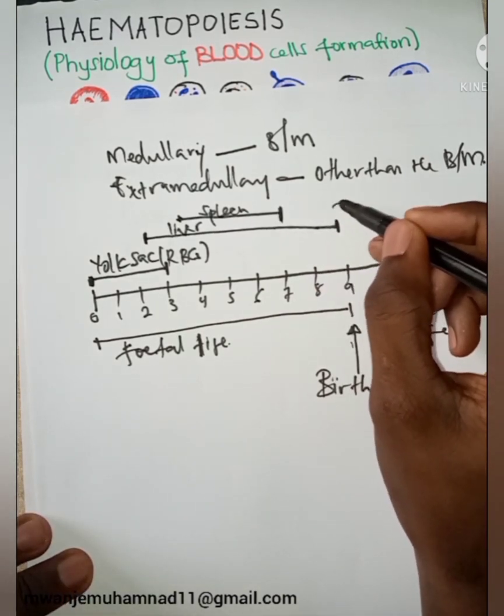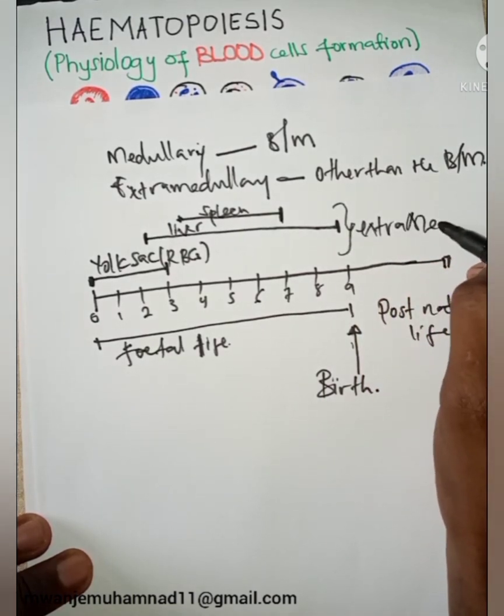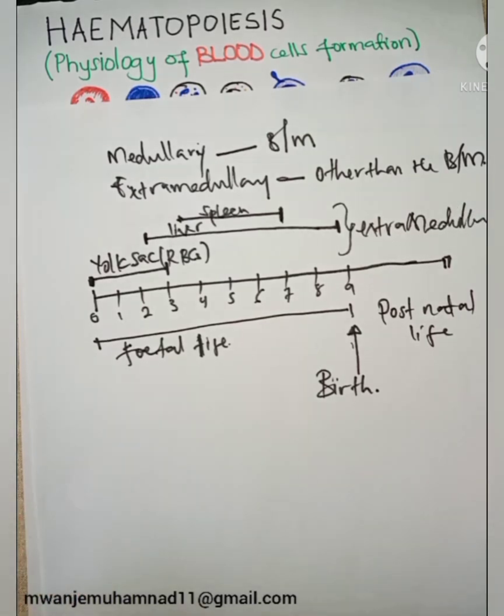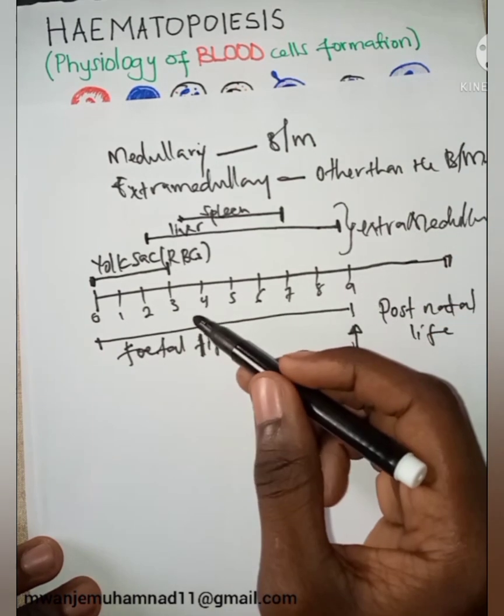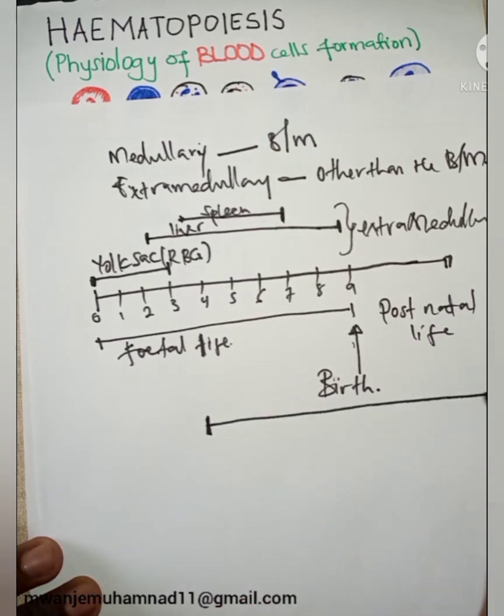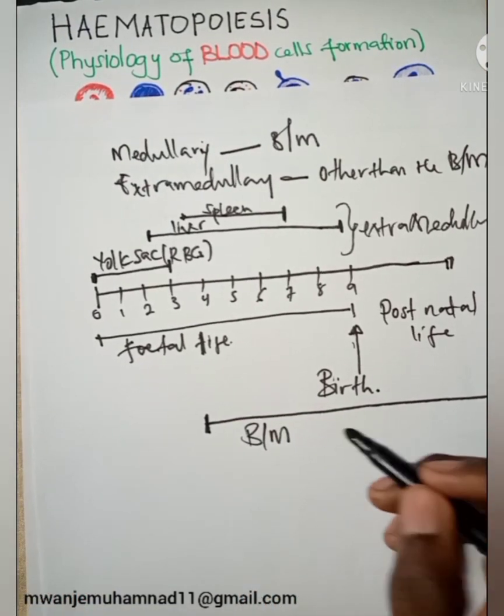This is the example of extramedullary hematopoiesis. The bone marrow comes in after the fetus is now fully formed, every organ is available, we even have the bones now. So at around the fourth month to even the postnatal life, the bone marrow will be producing blood cells, and this is medullary.